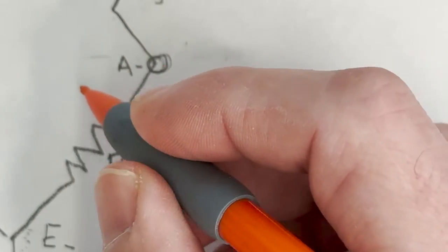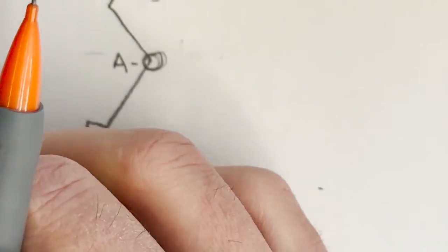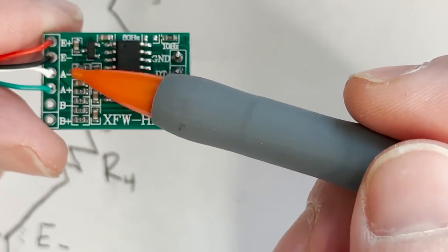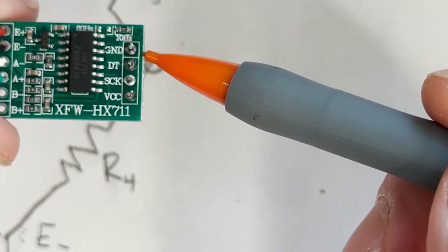And then the voltages that we're reading between these two points, so this is A plus and this is A minus over here. So those will be the voltages that we read and those are connected all here. Okay, on the other side of the board.